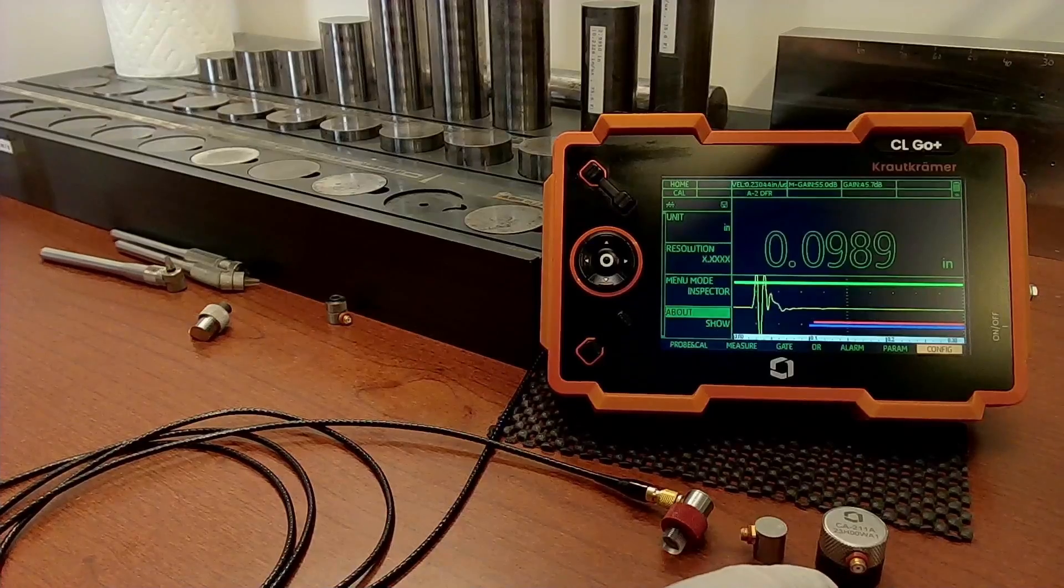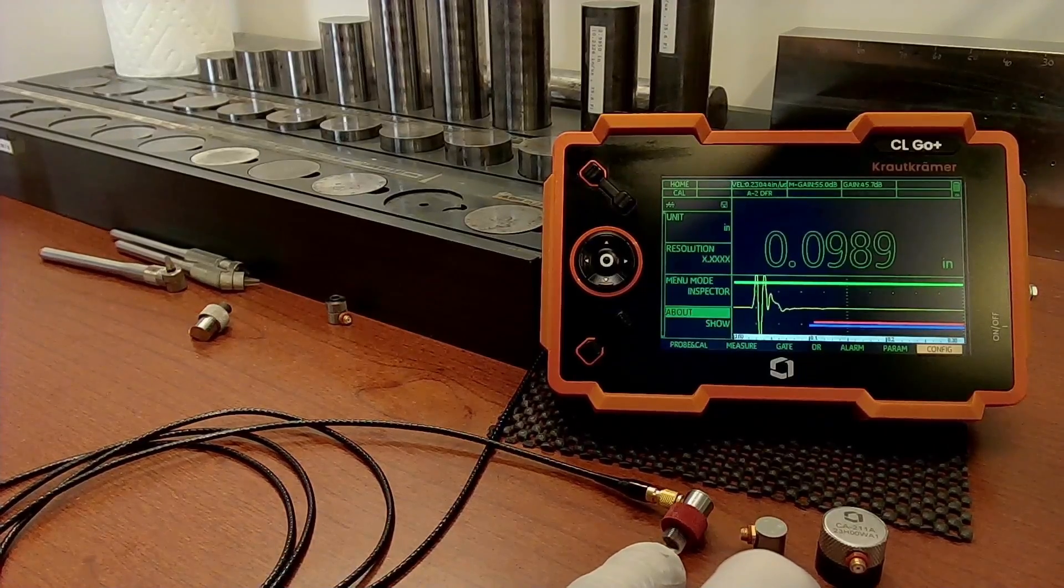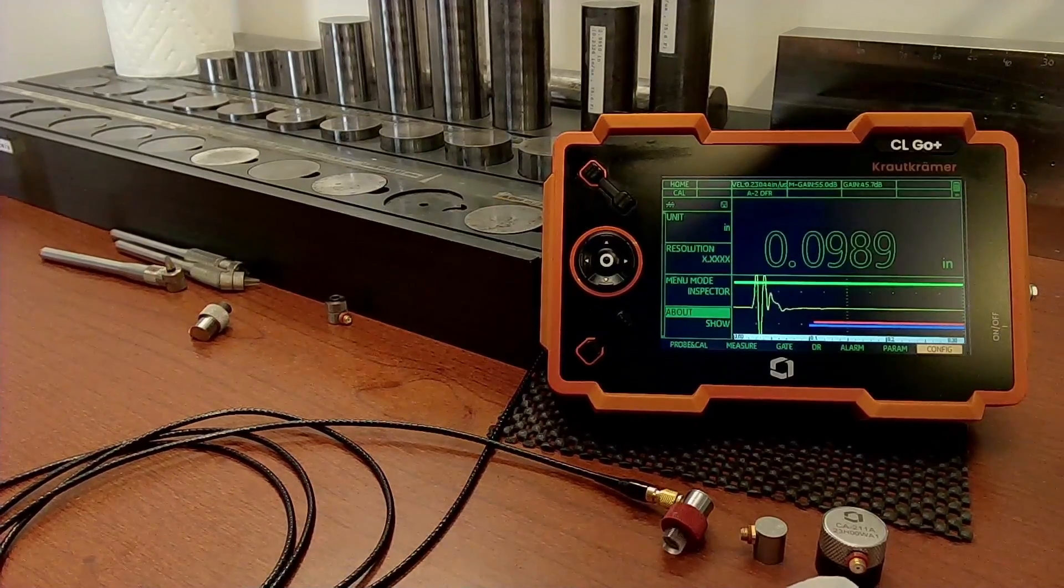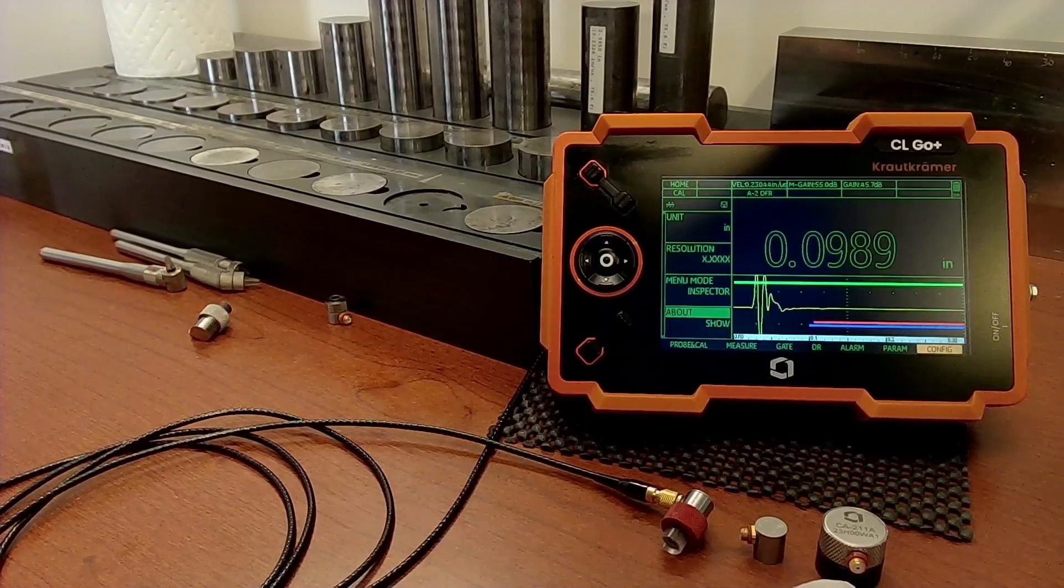The measurement range goes from about seven thousandths of an inch on the low end using the Alpha-2 DFR up to 20 inches or so with the CA-211 probe.